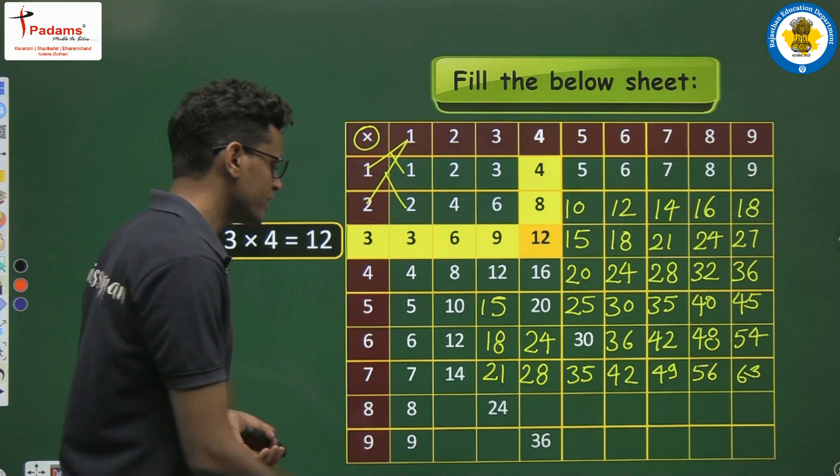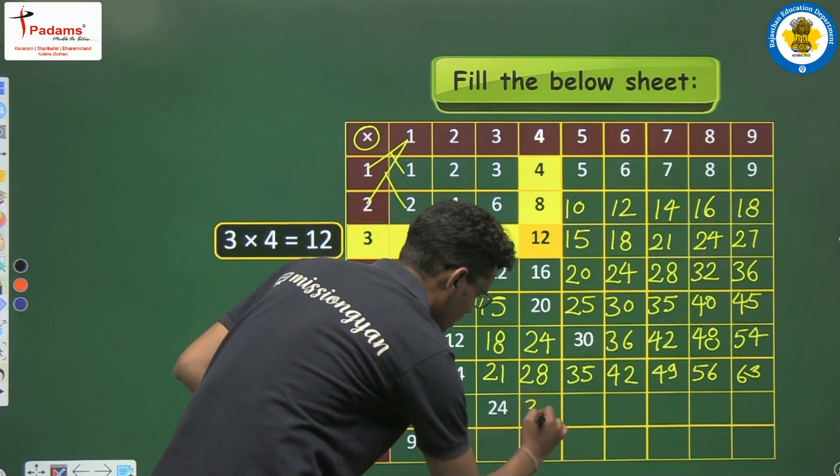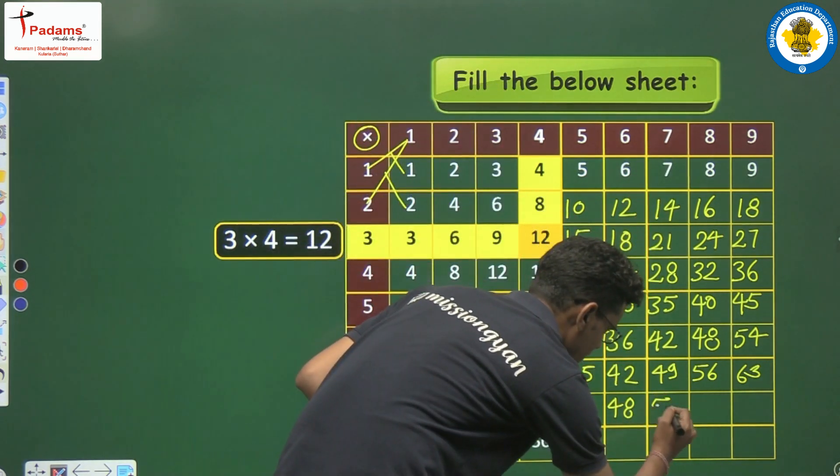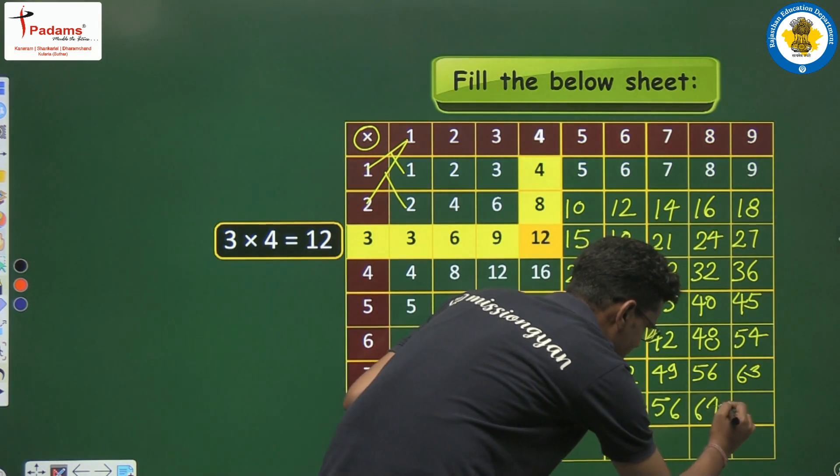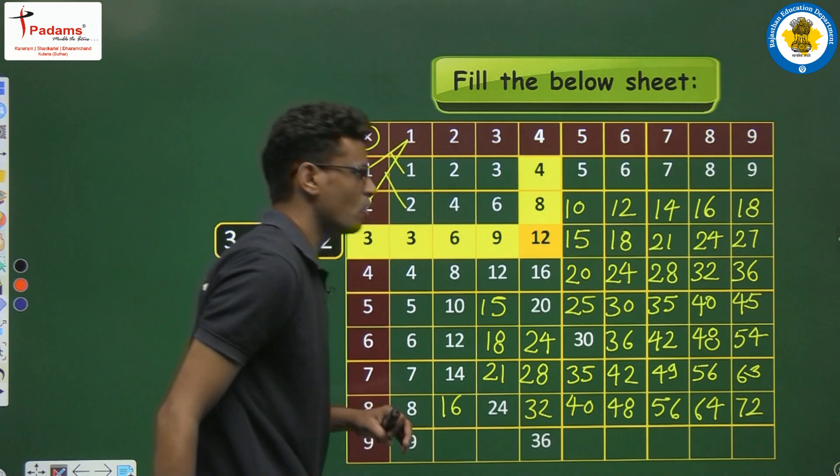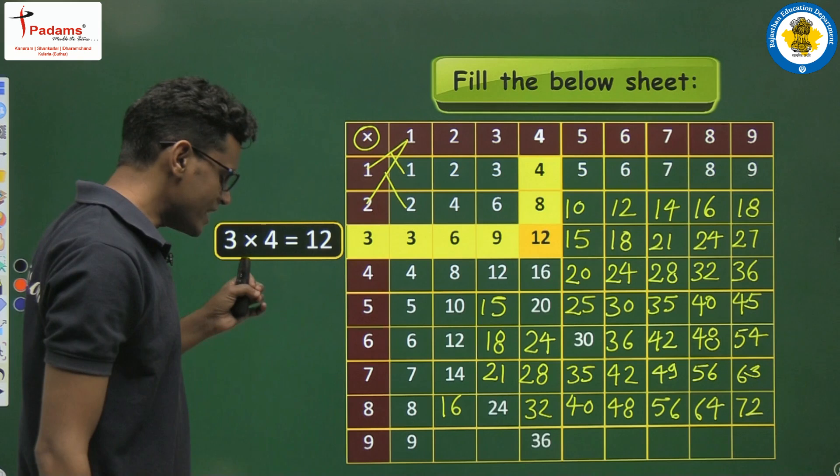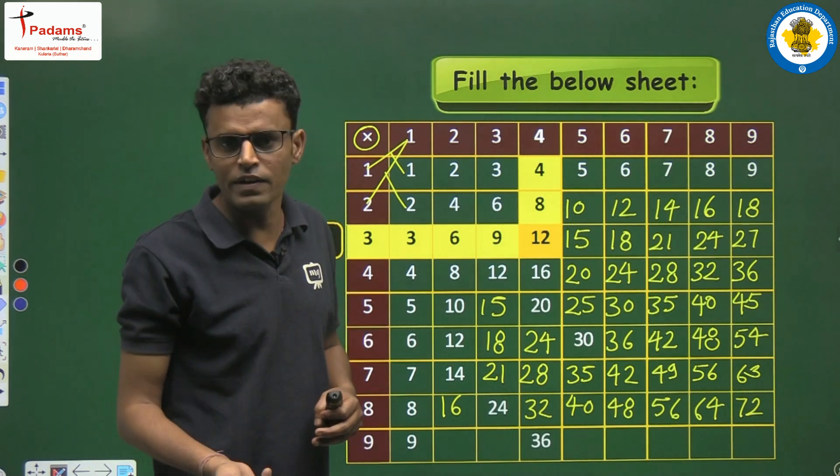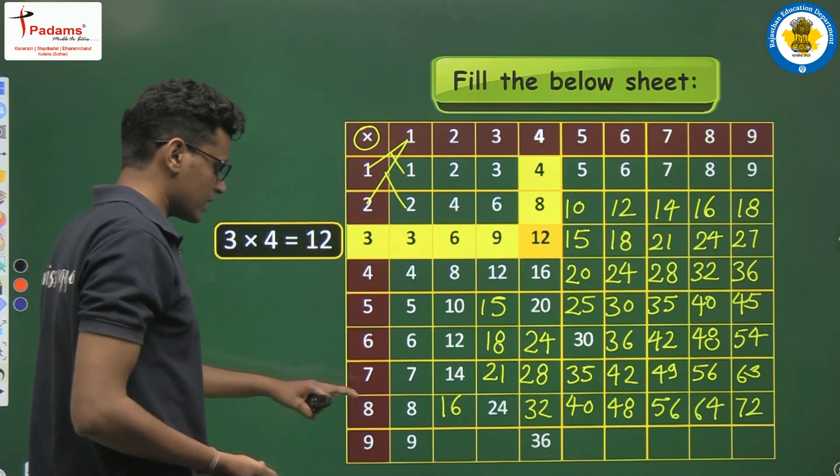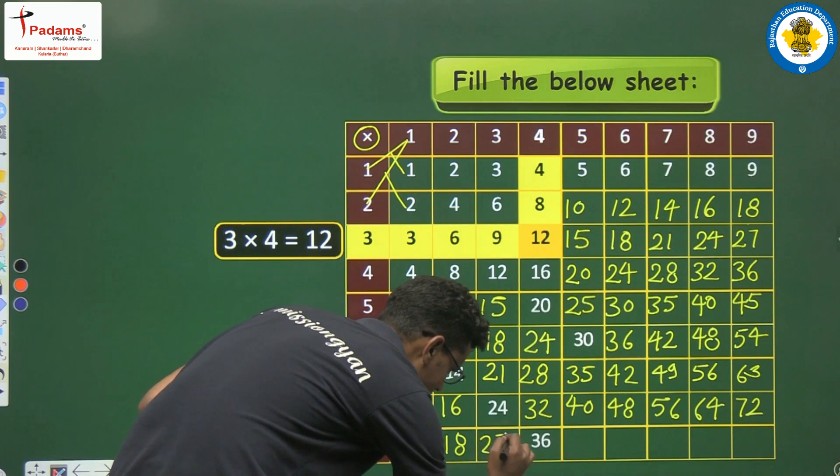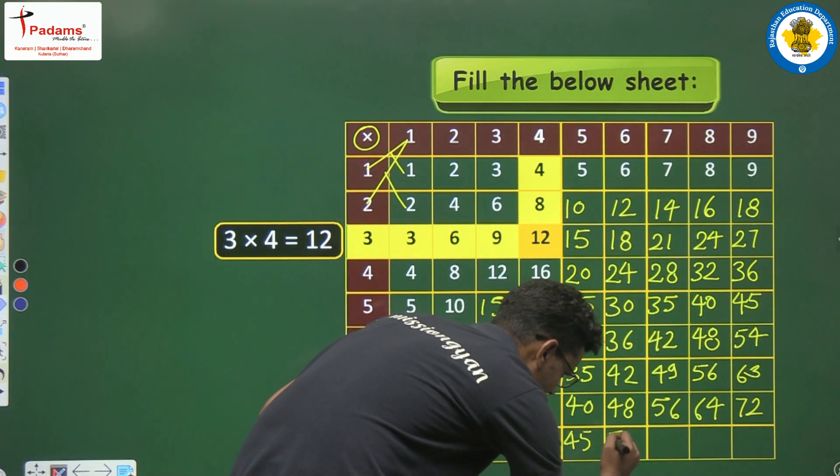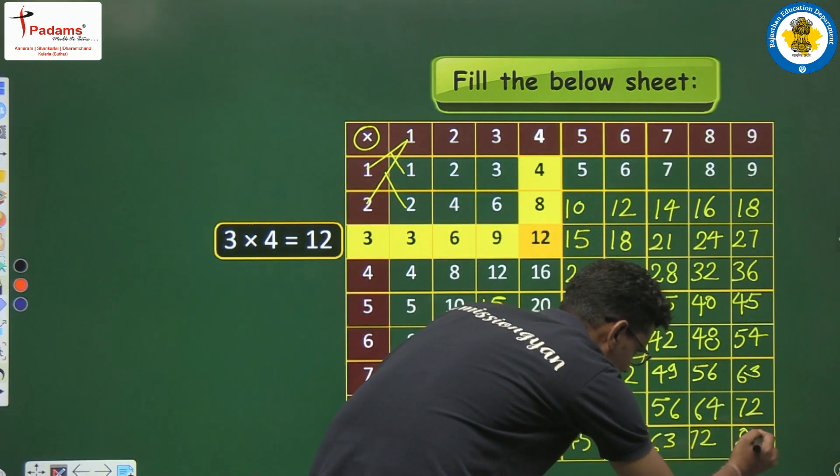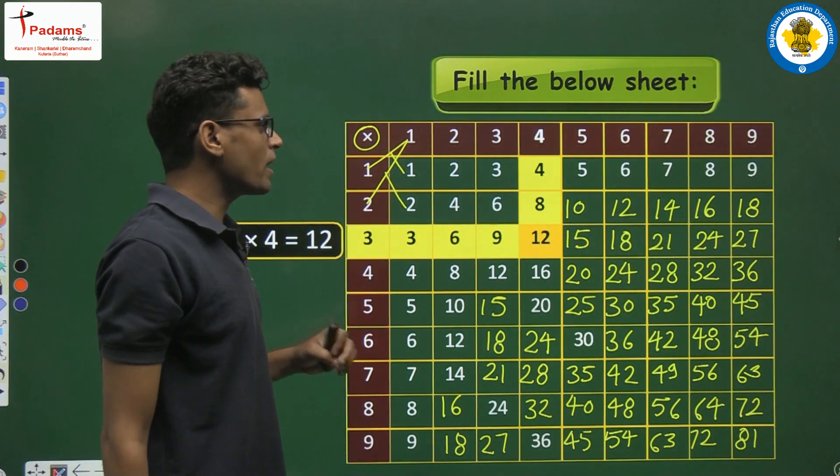after it we have 42 and then 7 times 7 is 49, then we have 56 and after that we have 63 at 9 times by 7, clear? If we talk about the 8 table, then we have 8, another will be 16, 24, 32, 40, then we have 48. If we talk about 8 times 7, then we have 56. If we talk about 8 times 8 is 64, 8 times 9 is 72, okay?